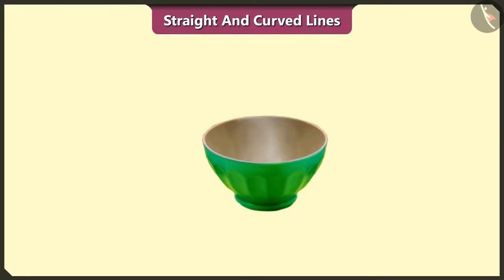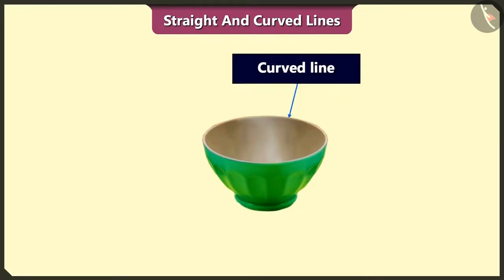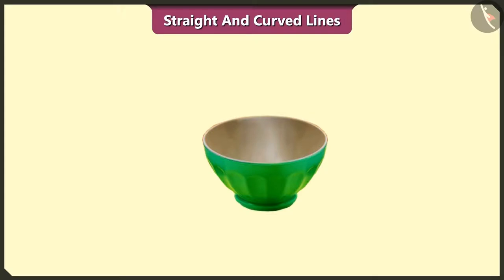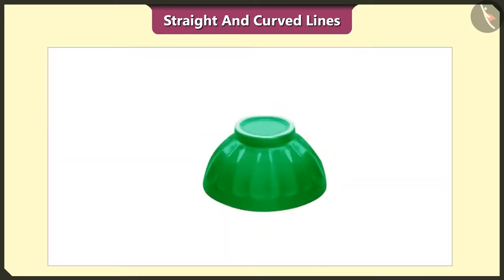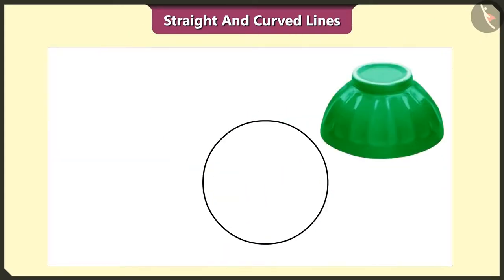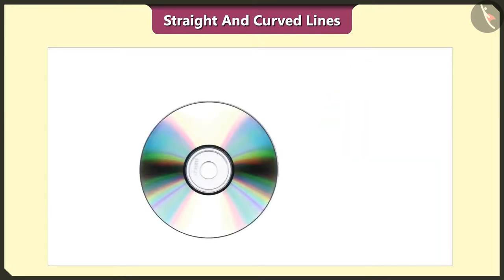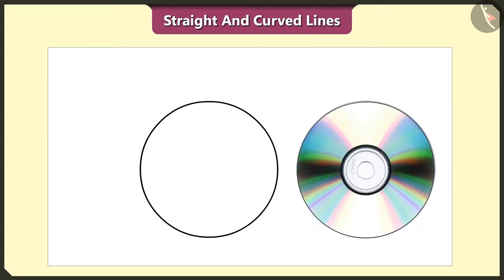Look, this part of bowel is made up of curved line. If we place this bowel upside down and trace it, we get a circle. The circle is also made up of curved line. Yes, the shape of a CD is also curved.